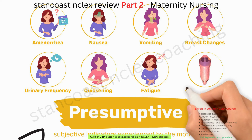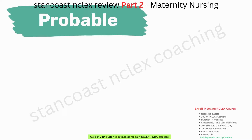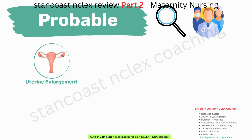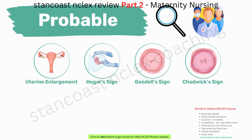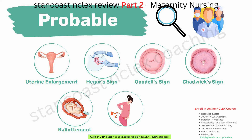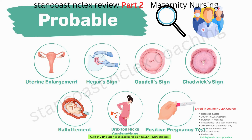Probable signs are objective findings that can be observed by a healthcare provider, such as uterine enlargement, Hegar's sign (softening of the lower uterine segment), Goodell's sign (softening of the cervix), Chadwick's sign (violet colorization of mucous membranes), ballottement (fetal rebound on palpation), Braxton-Hicks contractions, and a positive pregnancy test that detects human chorionic gonadotropin.